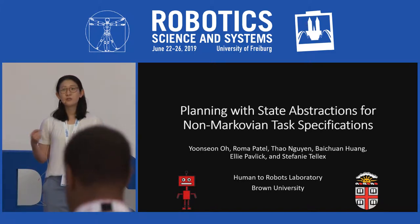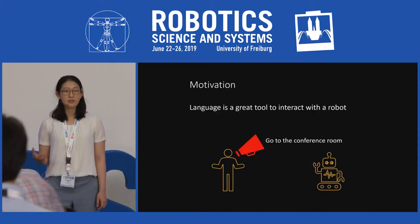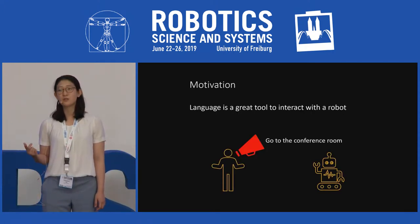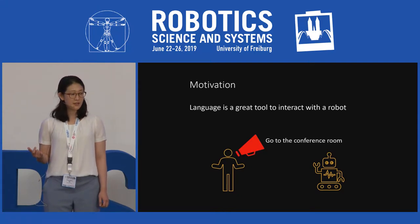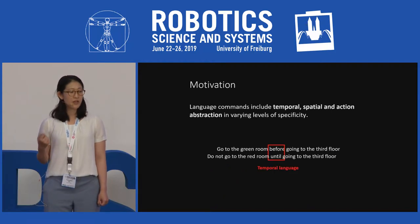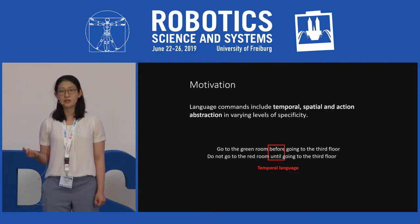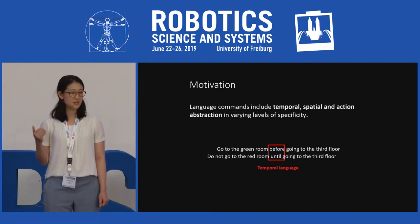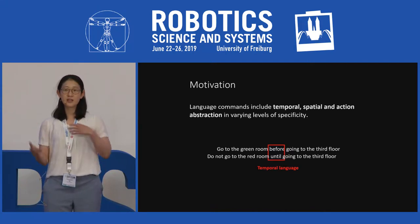Usually humans interact with others through language, and language is a great tool to interact with the robot. We need to understand the properties of language. Usually the language command includes temporal expressions. For example, we can specify the order of tasks using temporal expressions like 'before' or 'until', and it is translated into linear temporal logic expressions.